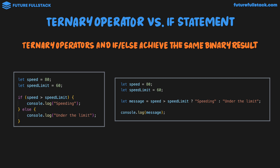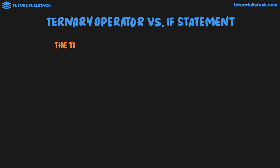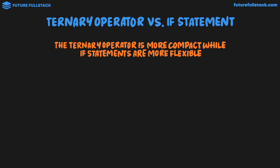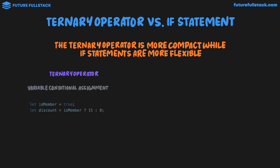Your big question is: what do I use when? The ternary operator is more compact, while if statements are more flexible. There are two main use cases for the ternary operator. The first is variable conditional assignment — when we want to assign a value to a variable depending on a condition. For example: let discount equals isMember question mark 15 colon 0. The value of discount will be 15 or 0 depending on whether they are a member. So we're creating a variable whose value is dependent on a condition.